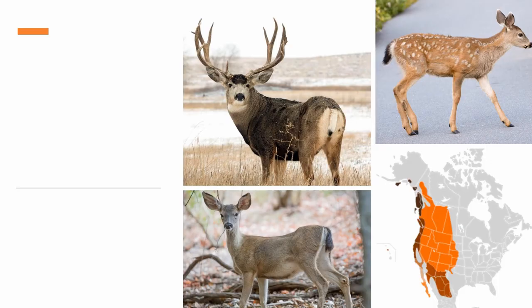The mule deer is found all over the western half of North America, mostly in the mountain states but also some of the plain states. It looks very similar to the white-tailed deer, with a couple of major differences. The first is its big ears, much bigger than the white-tailed deer's, which is the main reason they're called the mule deer. The second difference is its tail — the most common form has a white tail with a black tip, while the black-tailed deer subspecies has a black tail with a white rump underneath. The last major difference is in the antlers: the mule deer's antlers form two main branches instead of just one. The fawns are also darker colored than white-tailed deer fawns.